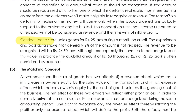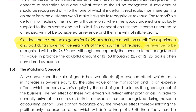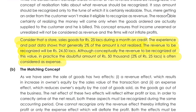Consider an example: a store sells goods for ₹25 lakhs during the month on credit. Past data shows that generally 2% of the amount is not settled. The revenue to be recognized will be only ₹24.5 lakhs, because the rest would be bad debts. The doubtful amount of ₹50,000 — being 2% of ₹25 lakhs — is often considered as an expense, and we can make a provision for it.